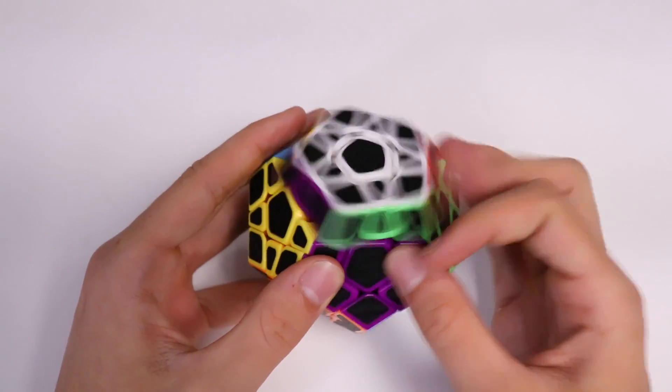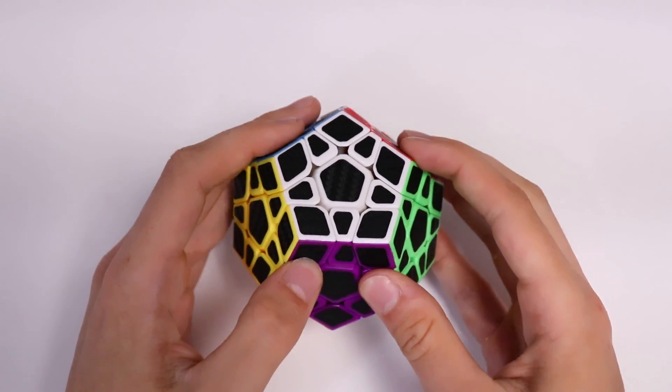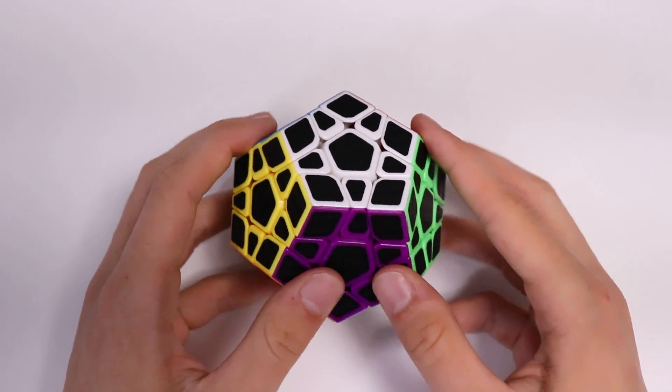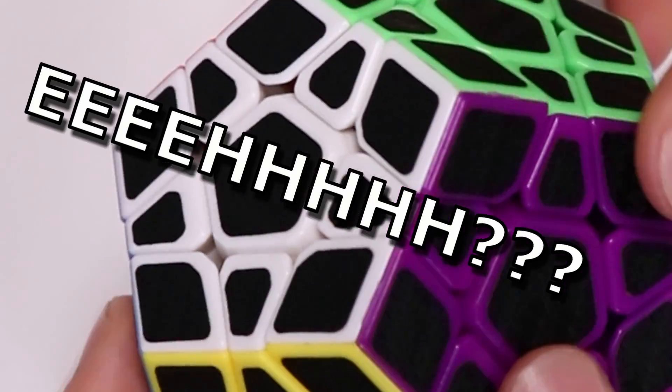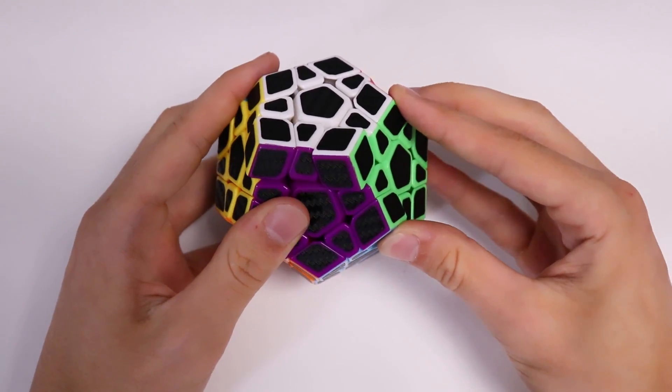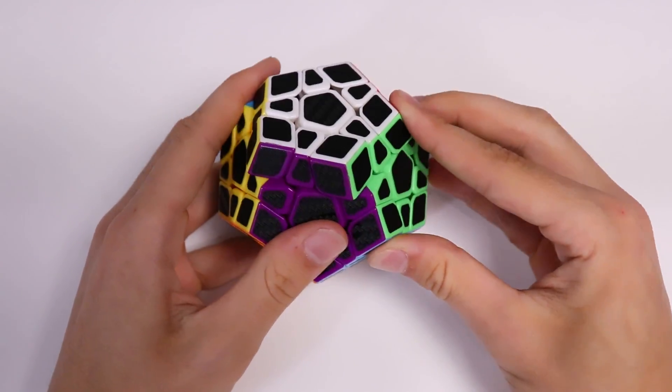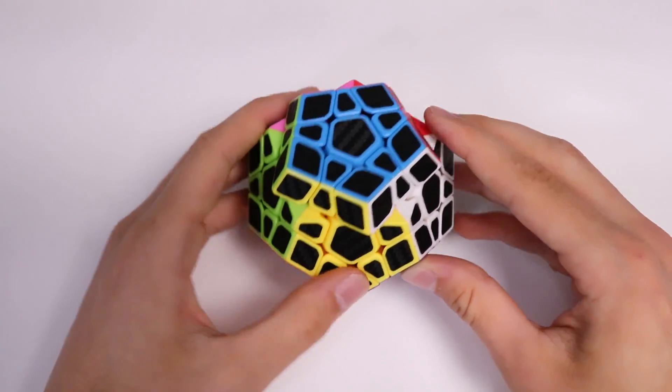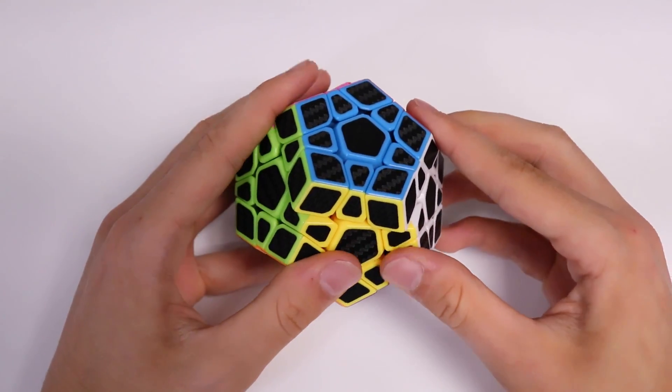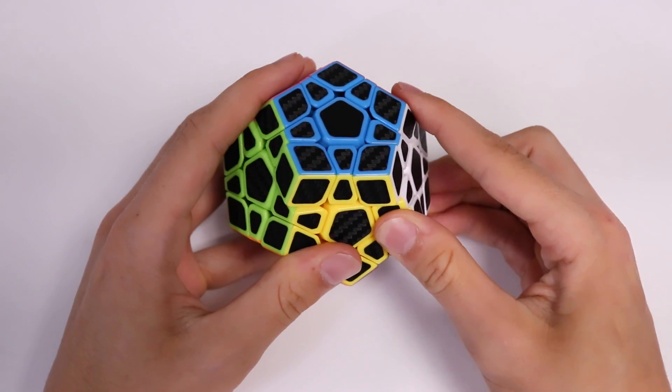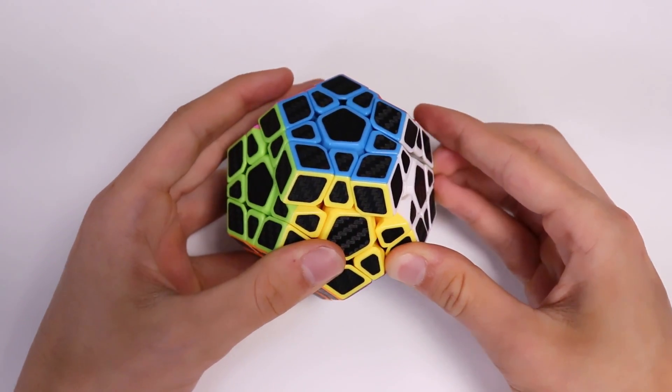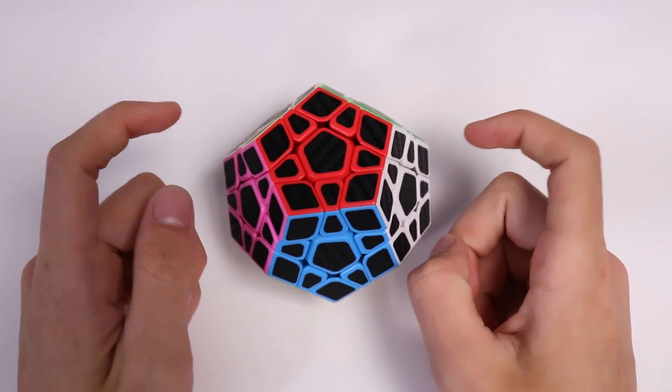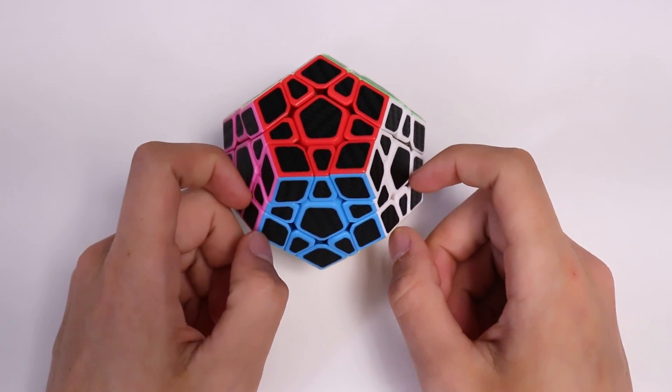Totally finger trickable, so that's nice. Corner cutting wise, this puzzle is not good. It goes pretty close to one piece for forward. It's got just about nothing for reverse. I would not call this a good corner cutter. There are definitely better corner cutting megaminxes out there.